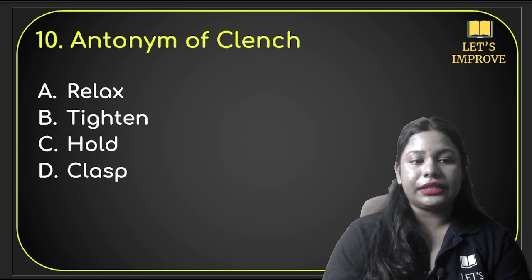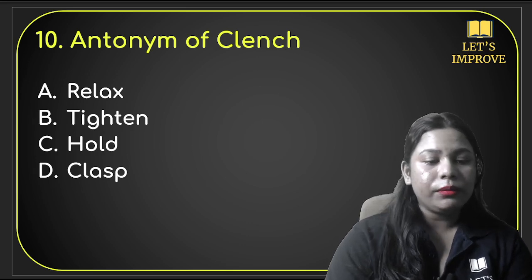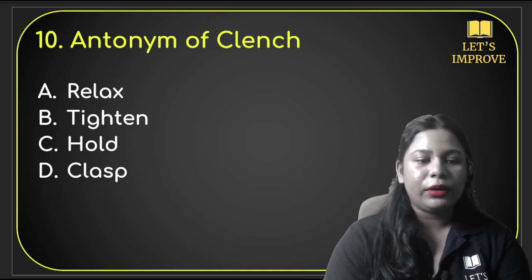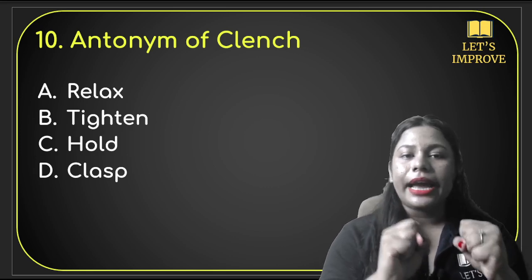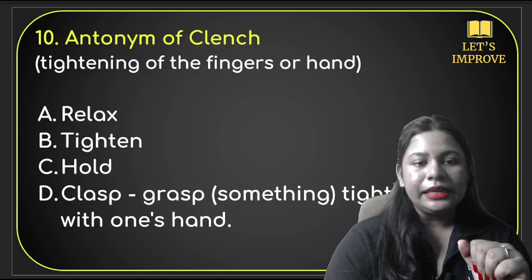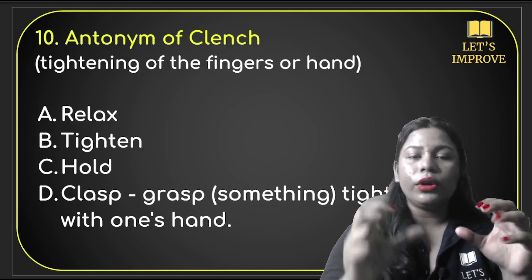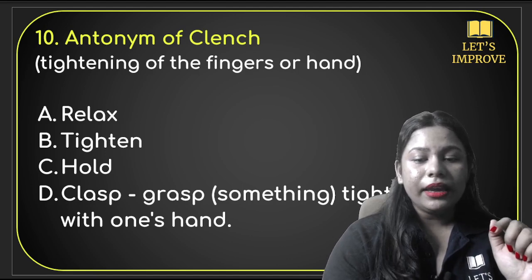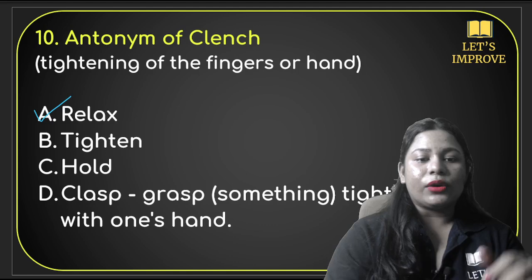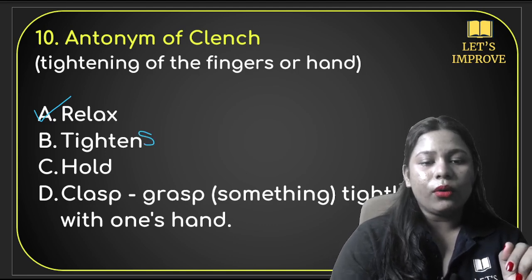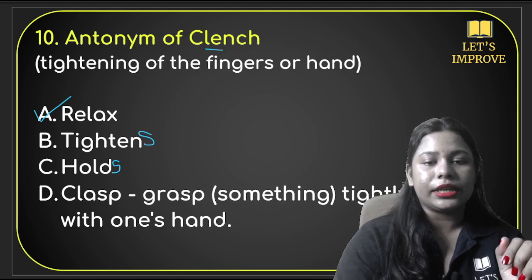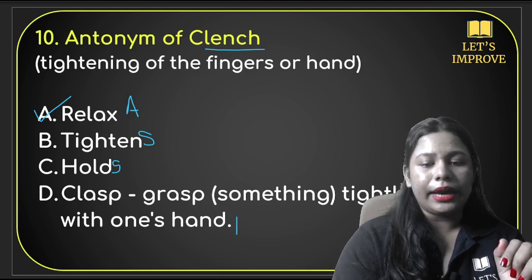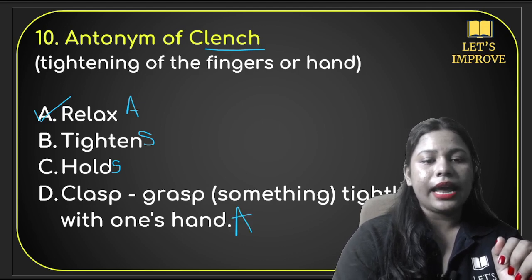Clench means to keep your hand tight — to grip tightly. That is what we call clench in English. So if you grip your hand tightly, that is clenching. The antonym should be 'relax.' Tighten is a synonym of clench. Relax and release are antonyms of clench. So the answer is relax.